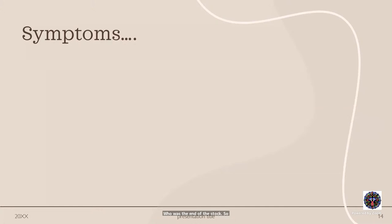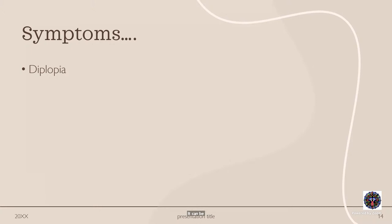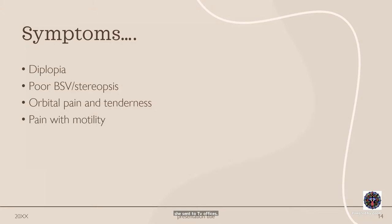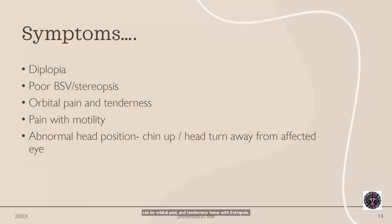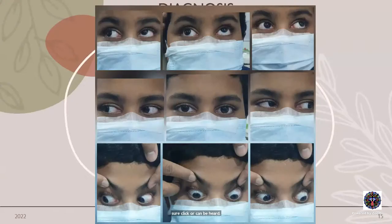Symptoms of Brown syndrome can be intermittent, recurrent, or constant. Patients present with double vision, poor binocular vision and stereopsis, orbital pain and tenderness, pain with extraocular motility especially in acquired Brown syndrome, an abnormal head position with chin-up or head turned away from the affected side to place the eye in abduction, and a click that can be heard or felt as the eye elevates in abduction.